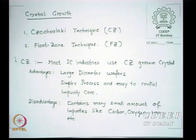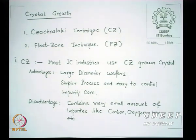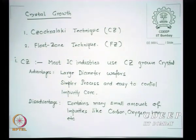Though the short forms are similar — CZ and FZ — the full forms are different. One is the Czochralski technique and the other is the Float Zone technique. In the case of the Czochralski technique, most integrated circuit manufacturing industries use CZ crystals. The advantage of this process is that very large diameter wafers can be created — perhaps 16-inch wafers can be pulled — whereas in the case of FZ this may not be as easy.